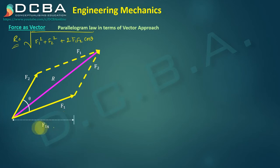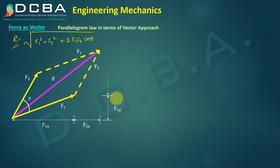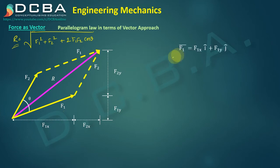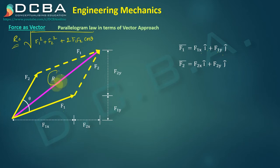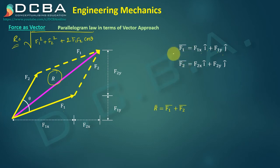For force F1, the horizontal component is F1x and the vertical component is F1y. For force F2, the horizontal component is F2x and the vertical component is F2y. Now we can represent them in vector forms: F1 vector equals F1x·i cap plus F1y·j cap, and F2 vector equals F2x·i cap plus F2y·j cap.